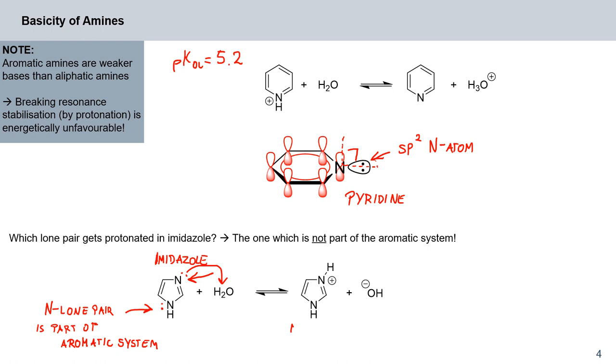You're forming an imidazolium ion here on this nitrogen, so it can snatch up a proton. In this case, we have two electrons from the carbon-carbon double bond, two electrons from the carbon-nitrogen double bond, and two electrons from the nitrogen lone pair that participates. Aromaticity is preserved in the protonated state. You see that reflected in the pKa value of this imidazolium ion, which is 6.95.